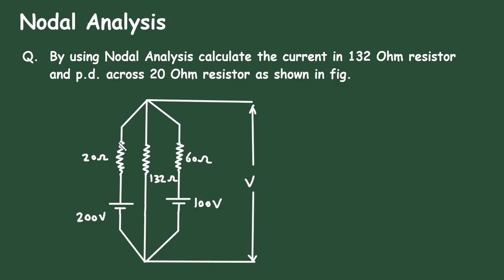We have to find the voltage across this 20 ohm resistor, the current through this 132 ohm resistor, and also we have to find this node voltage.